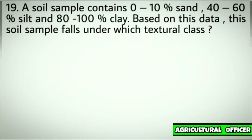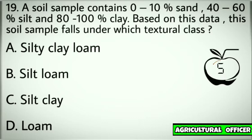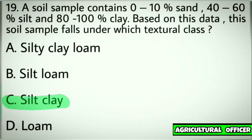Question number nineteen. A soil sample contains 0–10% sand, 40–60% silt, and 80–100% clay. Based on this data, this soil sample falls under which textural class. Options: A. Silty clay loam. B. Silt loam. C. Silty clay. D. Loam. Correct answer: C. Silty clay.